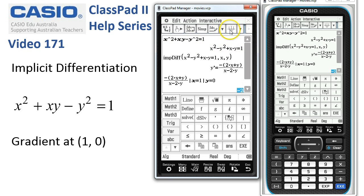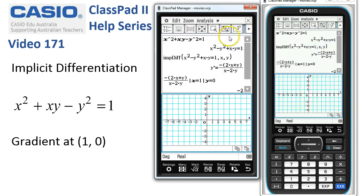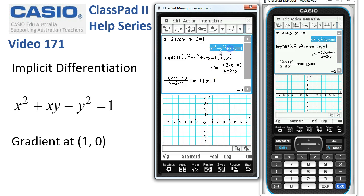From main, obviously very tricky to rearrange this for y and graph it in graph and table, but let's have a look here. If we tap on the graph icon, select the function in the top window and drag it into the bottom window.